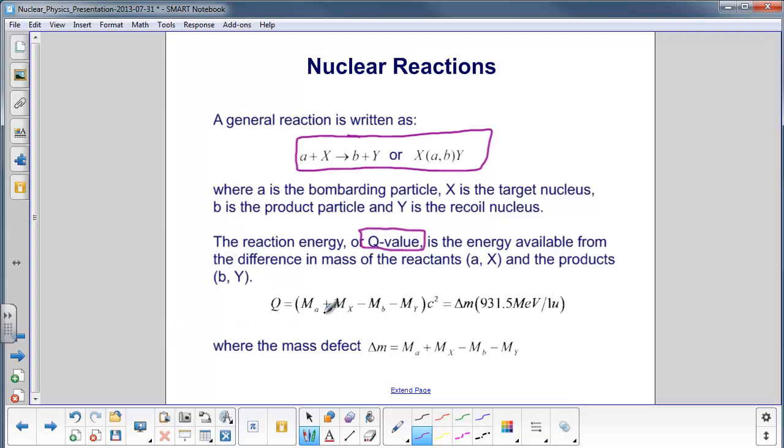We define the Q value as the mass of A plus the mass of X, so those are the two particles on the left side, minus the mass of B and the mass of Y, which are the two particles on the right side. We multiply it by C squared, so it's an energy. And another way of showing this is the mass defect in atomic mass units times 931.5 MeV per atomic mass unit.